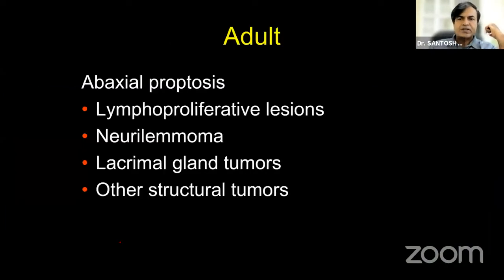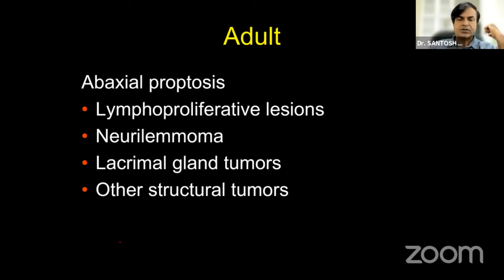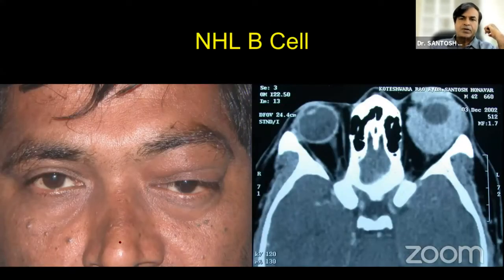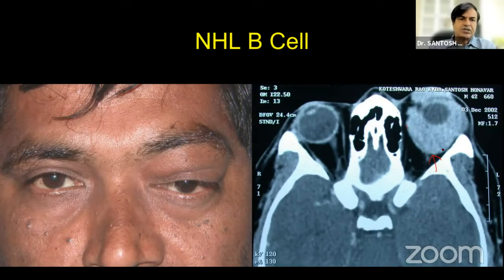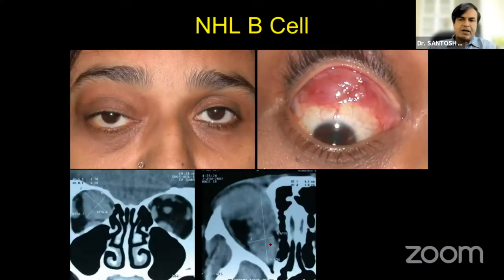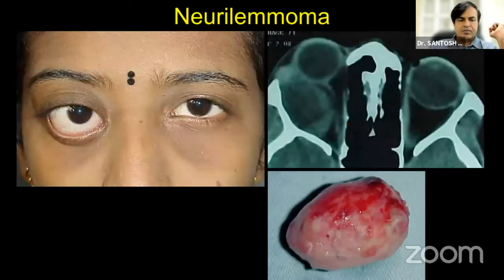Abaxial proptosis in adults is caused by lymphoproliferative lesions, neuromoma, lacrimal gland tumors, or other structural tumors — exactly in that order. Lymphoproliferative lesions are soft or firm to palpate, never hard, and they mold around the eye — that is the classic description. They surround the eye with rounded contours and are isodense on CT scan. Some can have irregular margins. If you're not sure what you're dealing with, lift the lid in the superior fornix and you may find a fleshy pink lesion with a salmon-pink color — that is clinically a lymphoma or lymphoproliferative lesion.